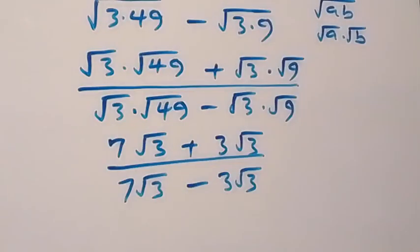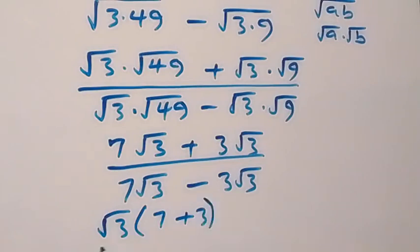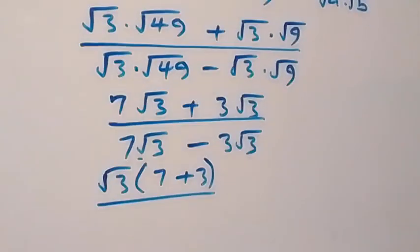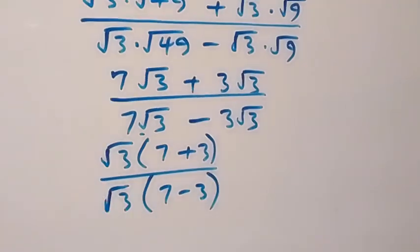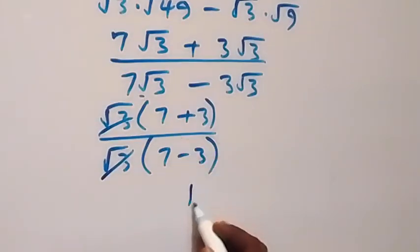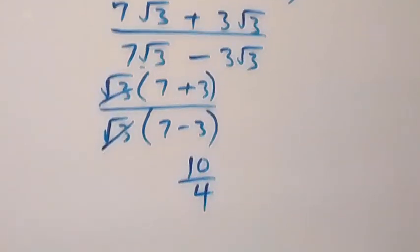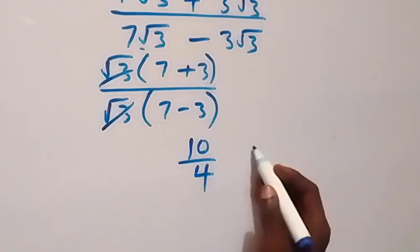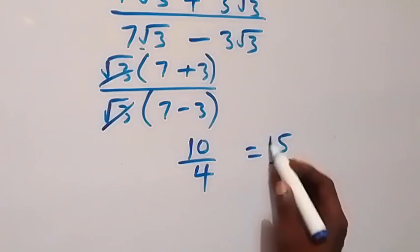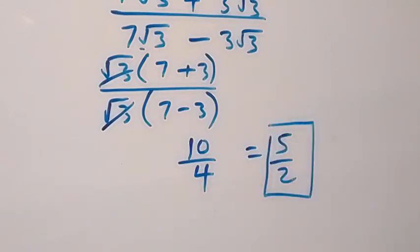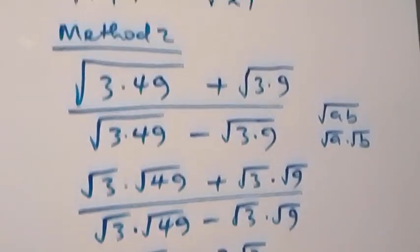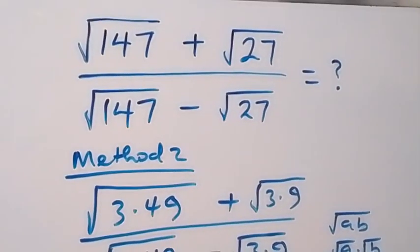Root 3 is common so we can bring root 3 out, leaving 7 plus 3 in the numerator, and root 3 is common in the denominator leaving 7 minus 3. Root 3 cancels root 3, and we have 10 over 4, which simplifies to 5 over 2 — the same answer as in the first method. Thank you for watching, subscribe to my channel, turn the notification bell on, and share this video. See you next lesson, bye for now.